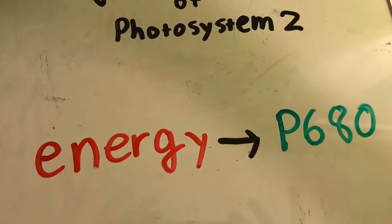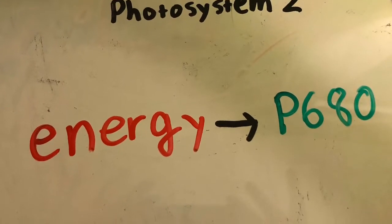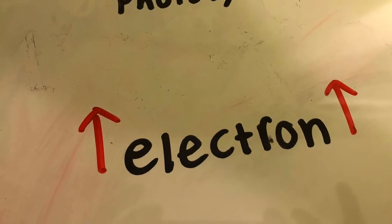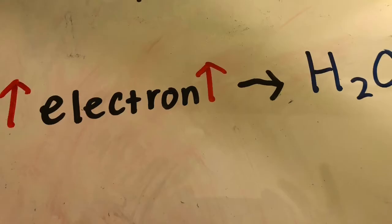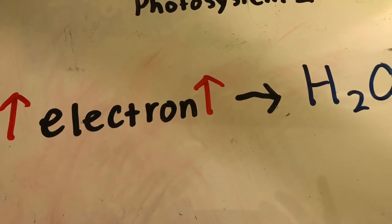Then the energy is transferred to P680, boosting an electron to a high energy level. The high energy electron is passed to an acceptor molecule and is replaced with an electron from water. The splitting of the water releases O2 that we breathe.